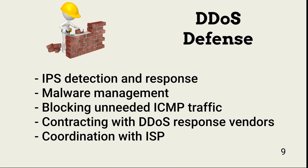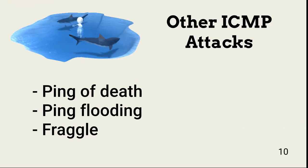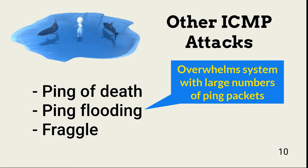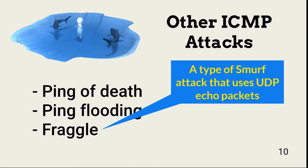DDoS defense requires taking steps to detect and respond. It also requires ensuring that on-premises devices remain free of bot malware. Ping attacks are still possible, but best practice security configurations stipulate blocking ICMP traffic at key points, especially between the external and internal networks. Three other DDoS attacks that use ICMP include ping of death, ping flooding, and fraggle. In a ping of death attack, a threat actor sends ping packets with a packet size larger than the target system can handle, causing it to crash. Ping flooding overwhelms the target system with a large number of ping packets. Fraggle is a type of smurf attack that uses UDP echo packets instead of ICMP packets.